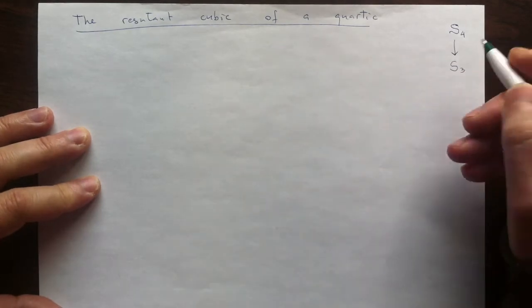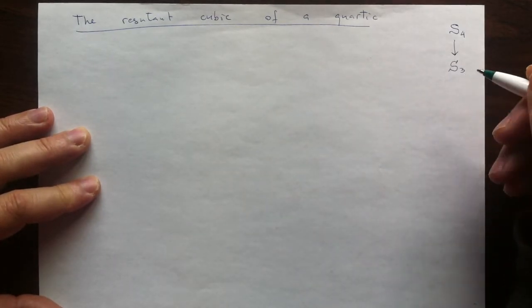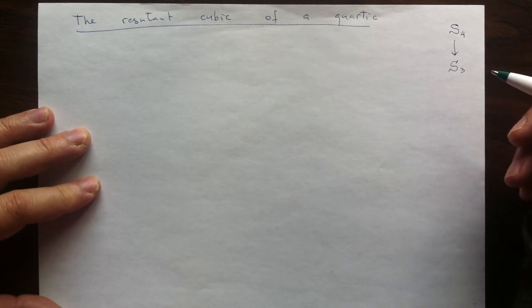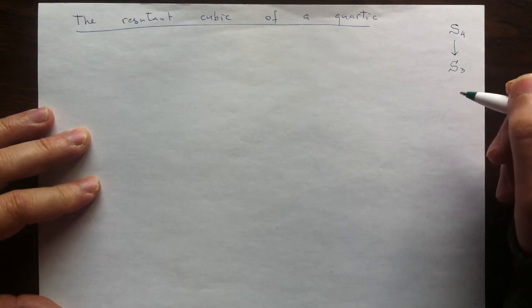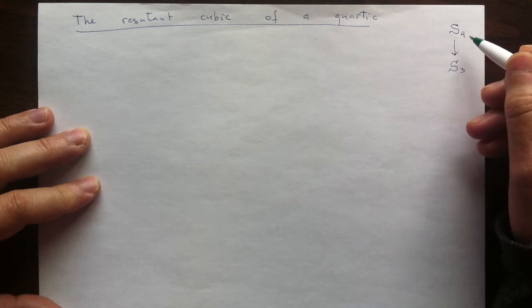Any permutation of 4 things can be turned into a permutation of 3 things. And that comes from a special combinatorial property.